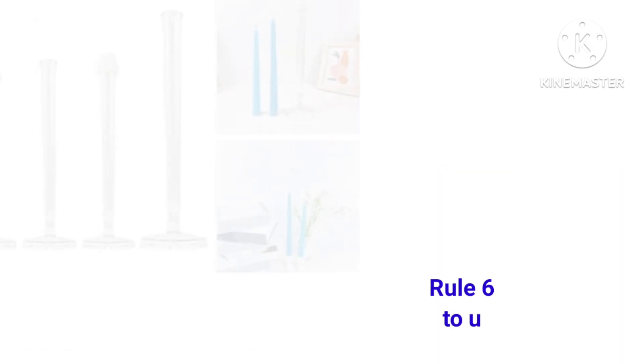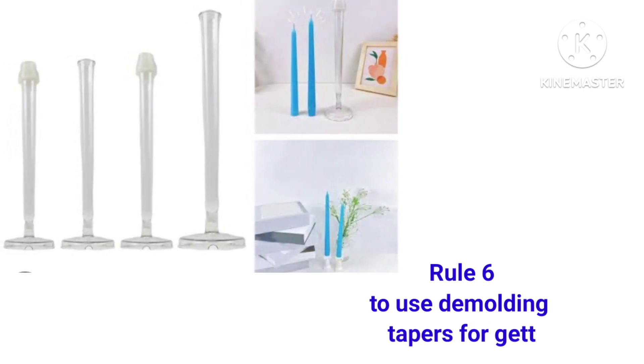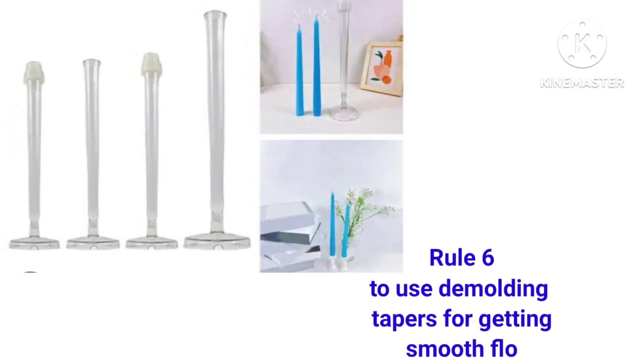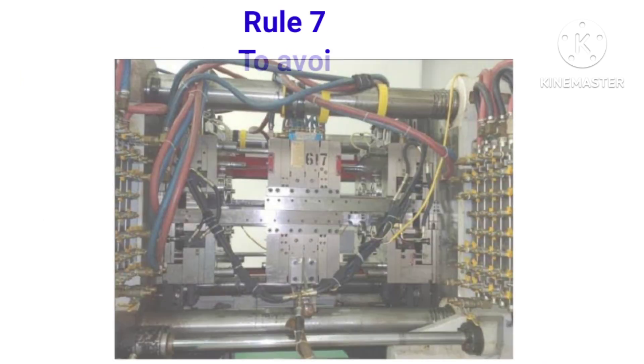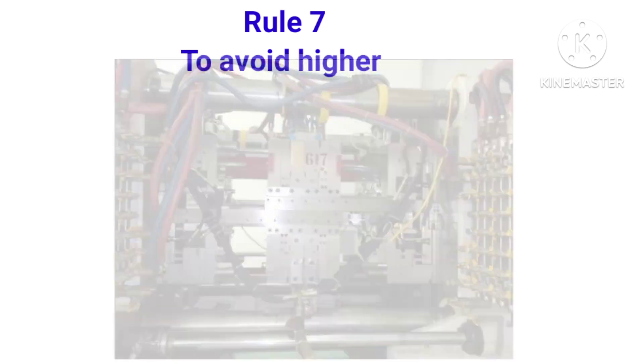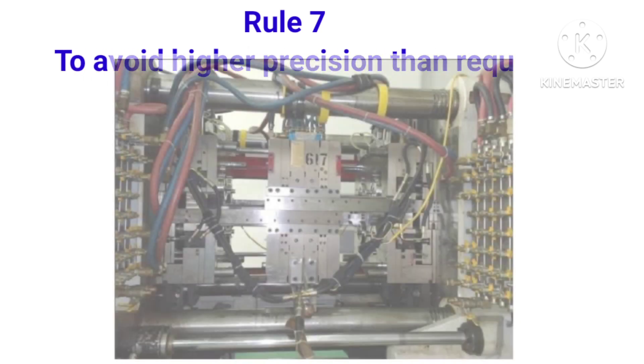Rule number seven is about higher precision. That means there is no need to go for the higher precision than required because it unnecessarily increases the tooling cost.